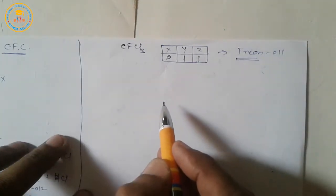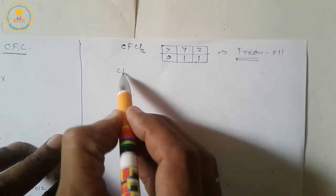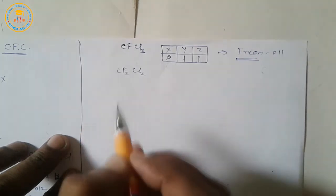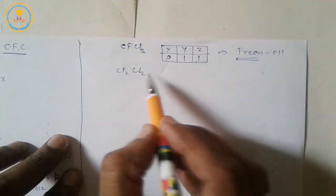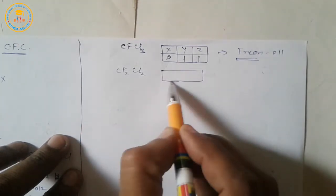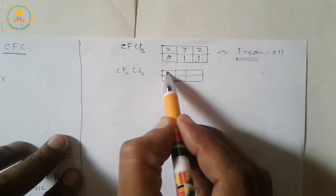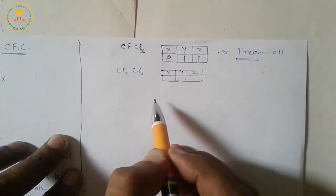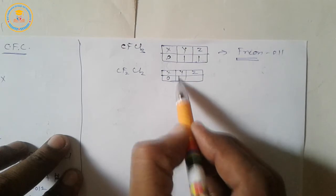Very important. Next example. For CF2Cl2, values of X, Y, Z is 0, 1, 2.